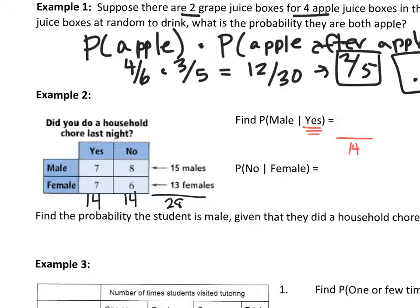Of those 14 who said yes, how many were male and said yes? That's seven. So the answer is seven out of 14, which is 50%.